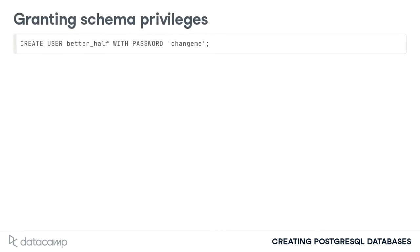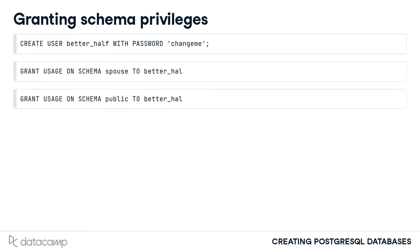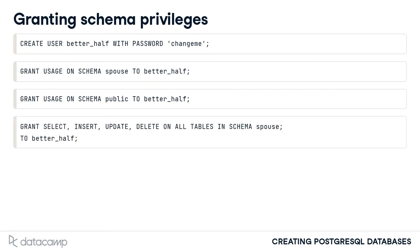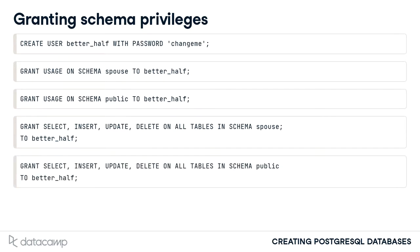Next, a new user account is created for your spouse named better_half. The new user account must be granted usage privileges on the spouse schema in order to access it. You can then give the familiar privileges to the better_half account for these schemas. You also give privileges to this account for the public schema, but give no access privileges for the better_half account to the me schema.